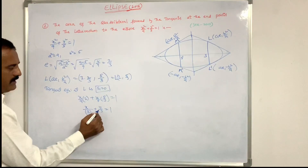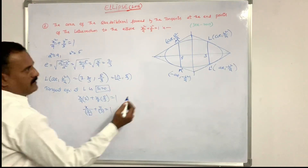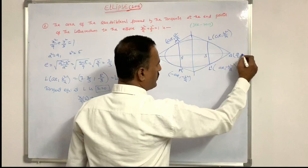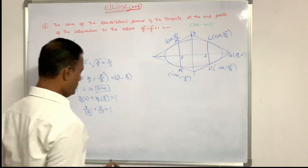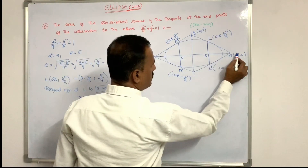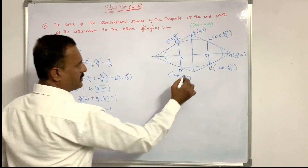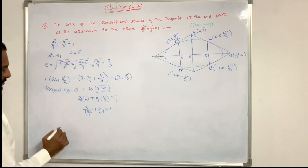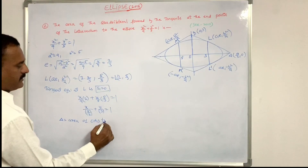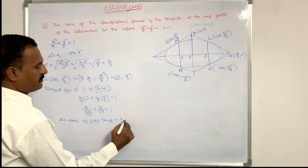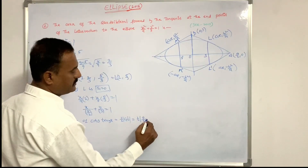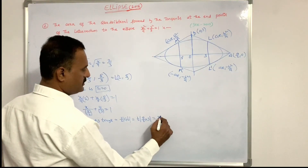This is in the form x/A + y/B = 1. Therefore the coordinates of A: put y = 0, x = 9/2, giving (9/2, 0). And coordinates of B: put x = 0, giving (0, 3). So x-intercept is 9/2 and y-intercept is 3. Therefore area of triangle OAB = (1/2)|9/2||3| = (1/2)(27/2) = 27/4.